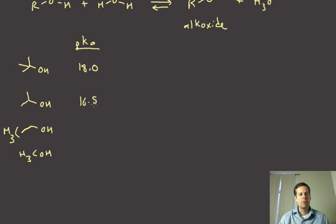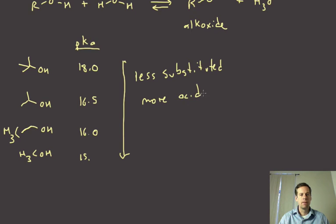And we could take a look at what is the pKa trend here. We have 18, 16.5, 16.0, and then 15.5. So you can see that as you get more substituted in that carbon position of the alcohol, that the acidity is going down. Or maybe I should change that around, actually. The acidity is increasing as we get less substituted. So the less substituted, the more acidic. Remember, the lower the pKa, the more acidic is the acid.